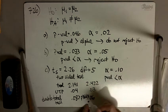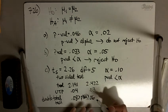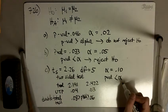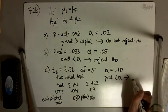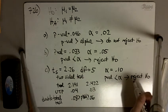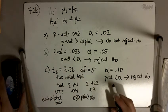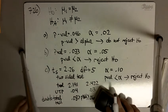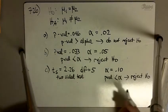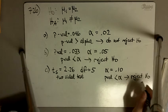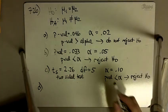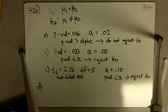Our alpha is 10%, and our p-value is between 6% and 8% — maybe 7% or 7.9%. Either way, our p-value is less than alpha, so we reject the null hypothesis. With a t-statistic of 2.26 and 5 degrees of freedom at alpha = 0.10, we have evidence that μ1 and μ2 are different.